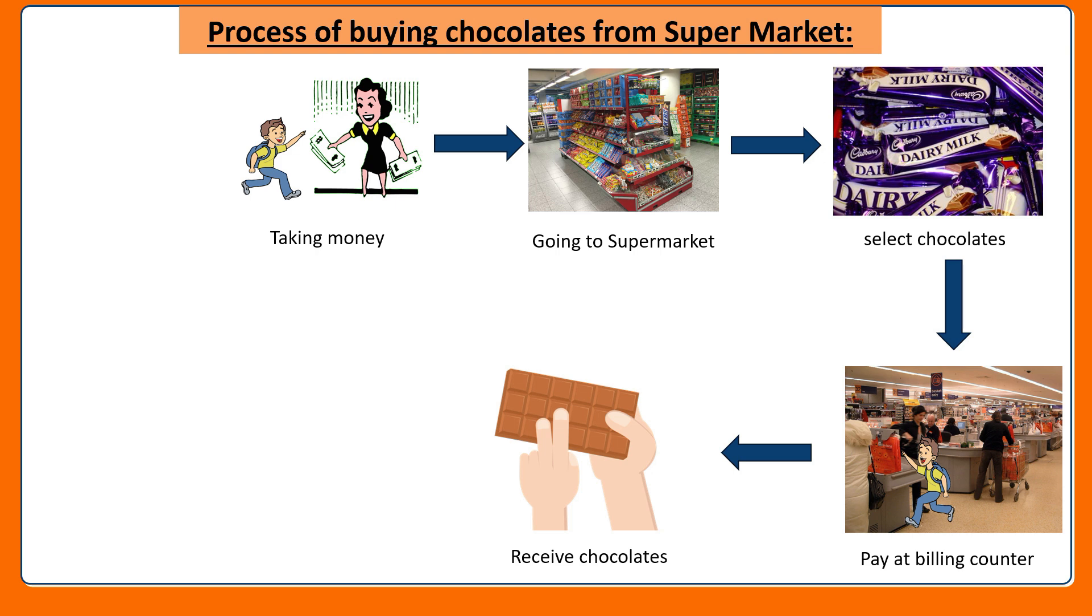I am going to add two more steps for the above task. Start, where we started the task. End, where we completed the task. Just like how we follow these steps to buy chocolates, computers follow algorithms to perform tasks.